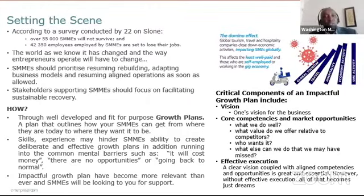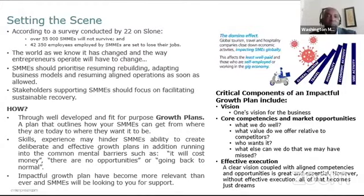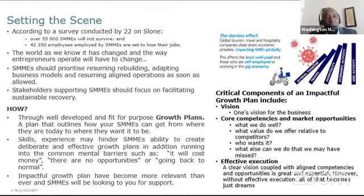To set the scene: we are almost in week seven of lockdown, and the implications are varied. According to one survey conducted by Sloan, over 55,000 SMMEs in South Africa will not survive. That invariably means close to 42,350 employees employed by those SMMEs are set to lose their jobs. Clearly, from the lockdown and what we've seen globally, the world has changed as we know it, and the way entrepreneurs operate will have to change.